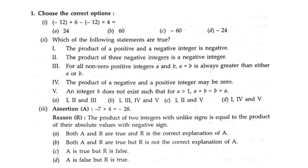Now let us see the second bit: which of the following statements are true? The first statement says the product of a positive integer and a negative integer is negative. Let us take positive integer 2 and negative integer minus 3. Plus into minus is minus, and 2 threes are 6, so we are getting negative. They said negative, so the first statement is true.